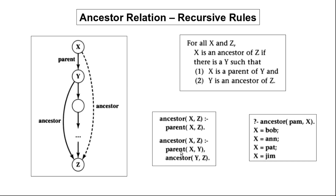If you try to execute this in SWI-Prolog, this is the output you would get. If we ask which persons pam is an ancestor of, you will get the answer that pam is the ancestor of bob, pam is the ancestor of ann, pam is the ancestor of pat, and pam is the ancestor of jim. If you run this, this is the output you would get.